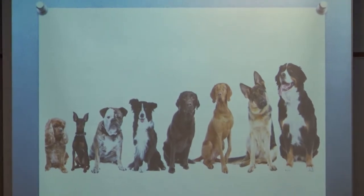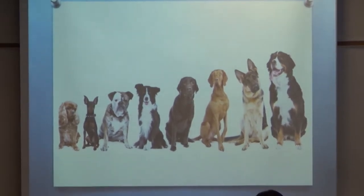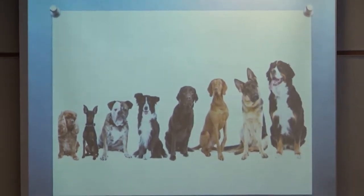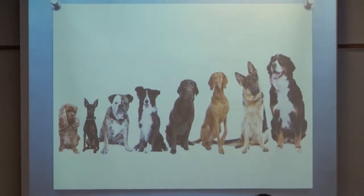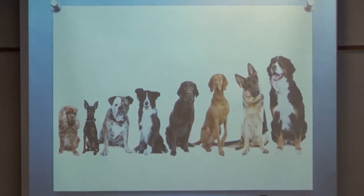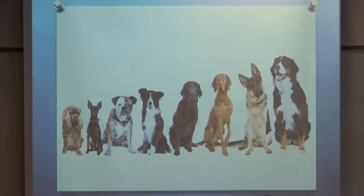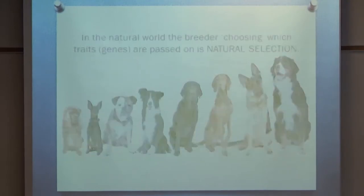Now, obviously, in the natural world, animals of different species don't have a selector doing this for them. They don't have an external agent. Instead, it's a natural process and that's where the term natural selection actually comes from. Because instead of an artificial breeder, we have a natural breeder or a natural selector. And this is what changes genes over successive generations.